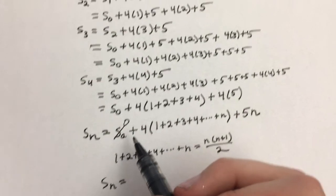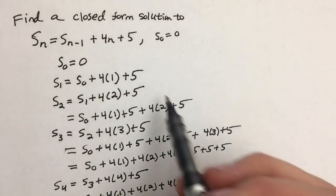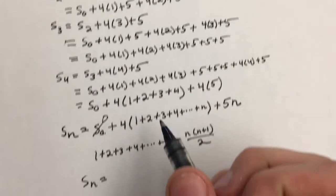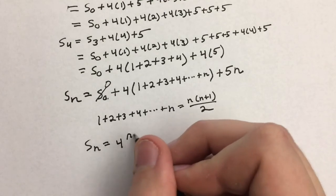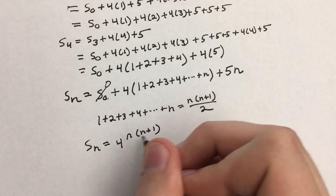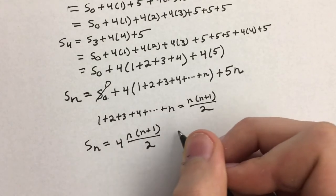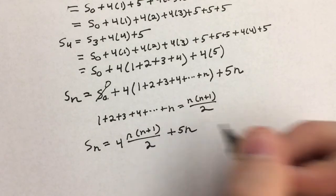And so we're going to substitute that formula in here. We replaced our initial condition with 0 because that's the initial condition that we started with here. And so this becomes 4 times n(n+1)/2 plus 5n.